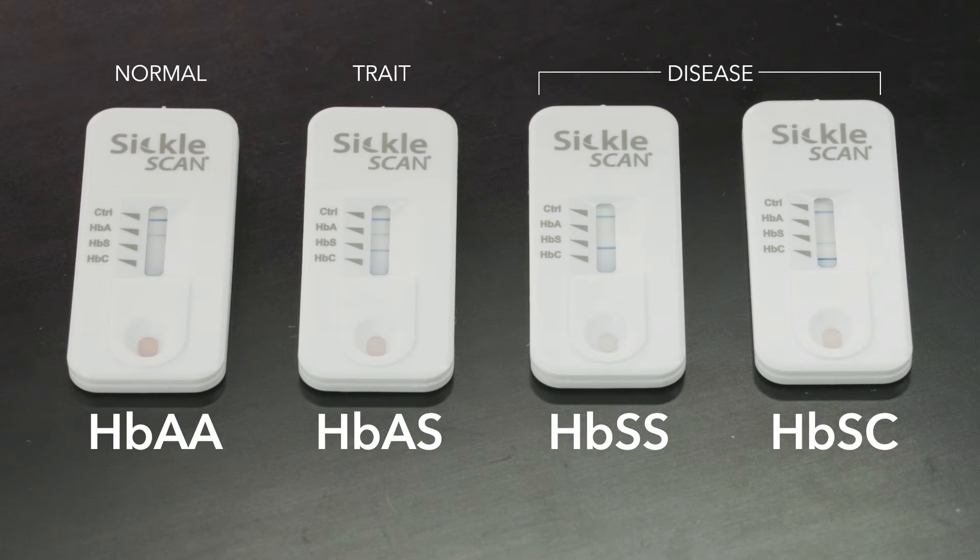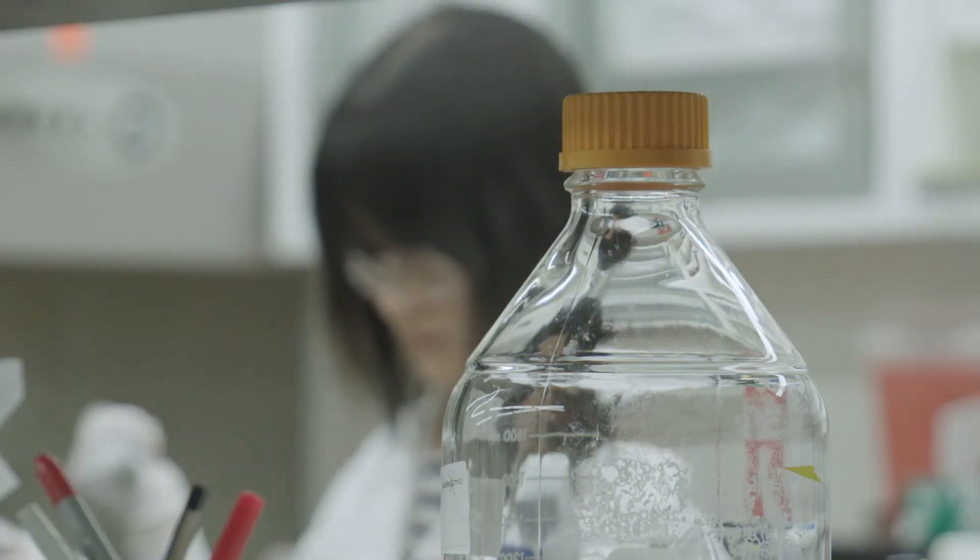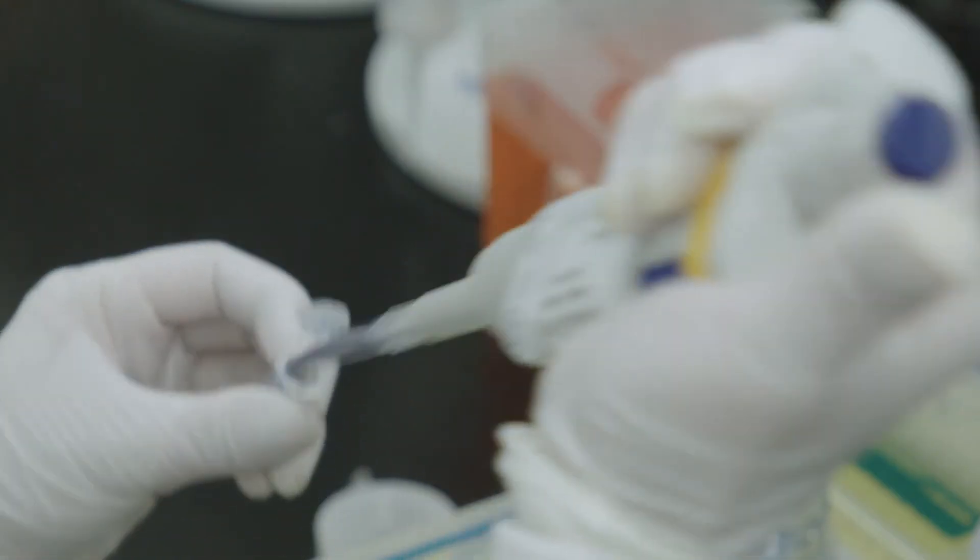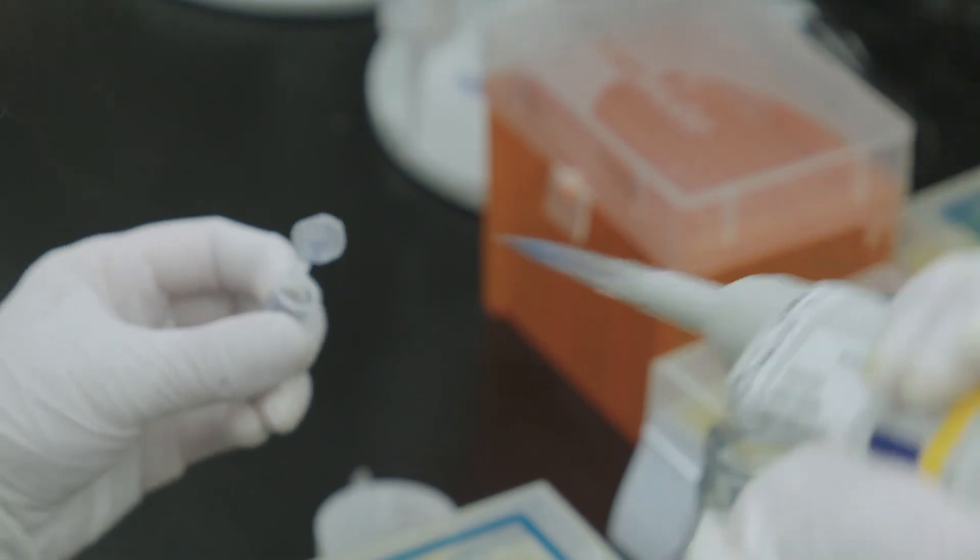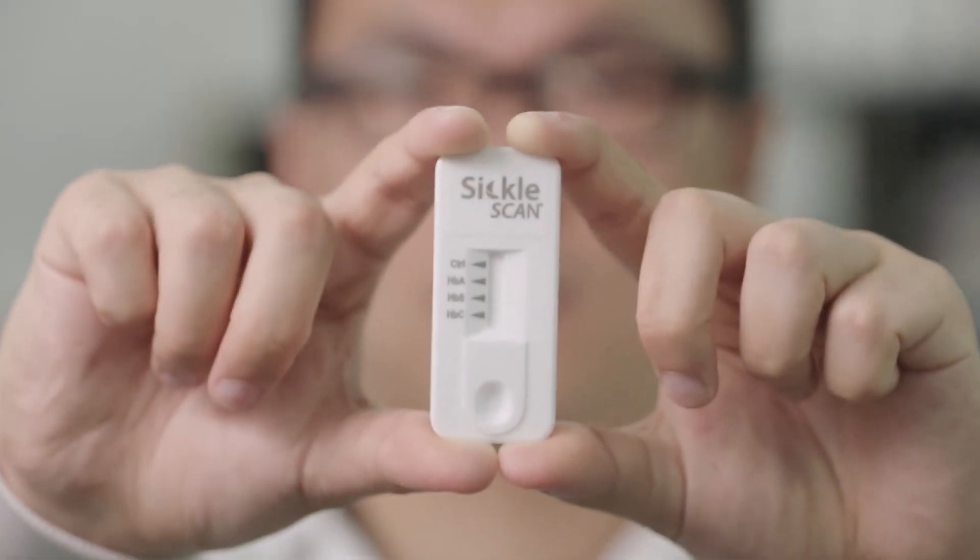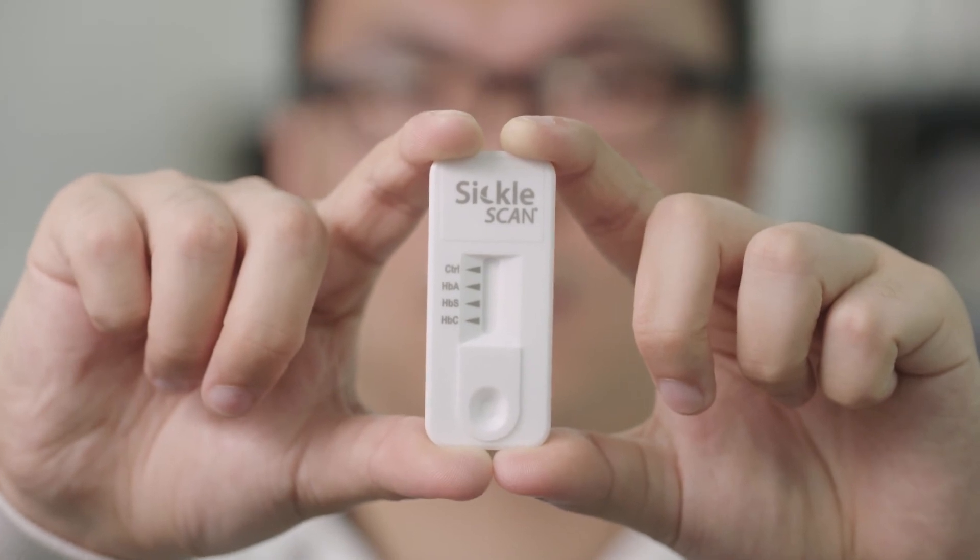By identifying these three hemoglobins, SickleScan can help distinguish between diseased, carrier, and normal patients. Fast, easy, accurate, versatile, and individually packaged for longer shelf life.